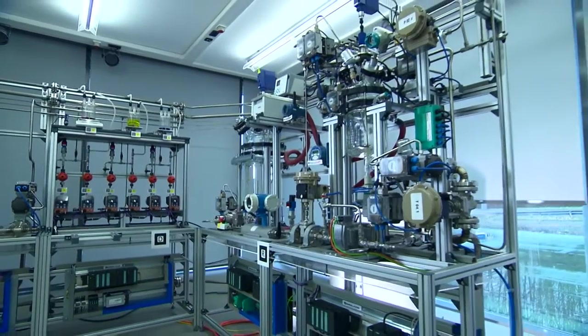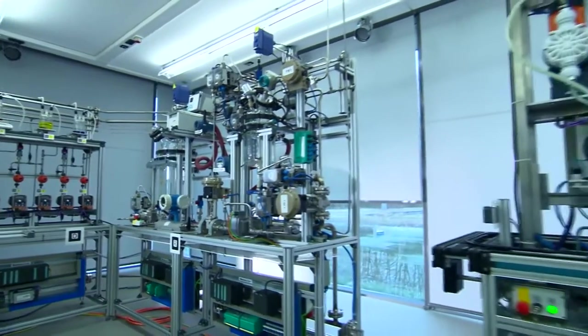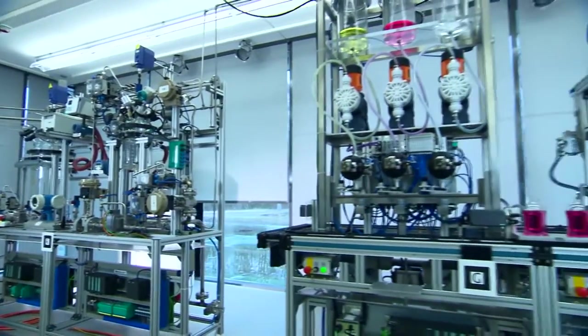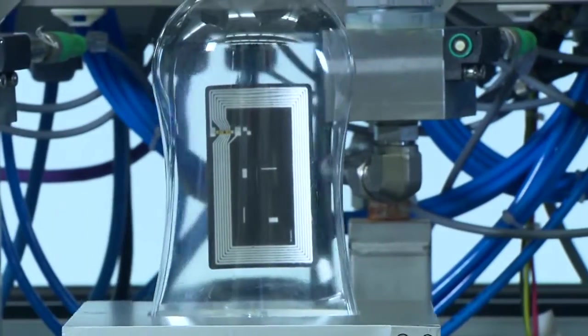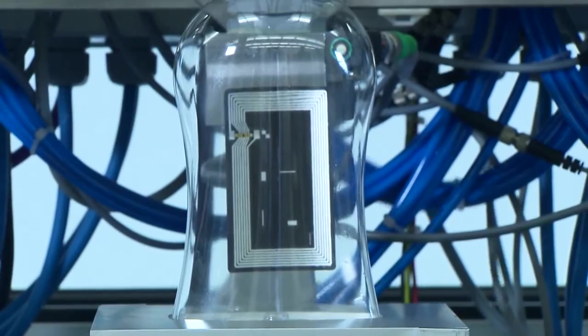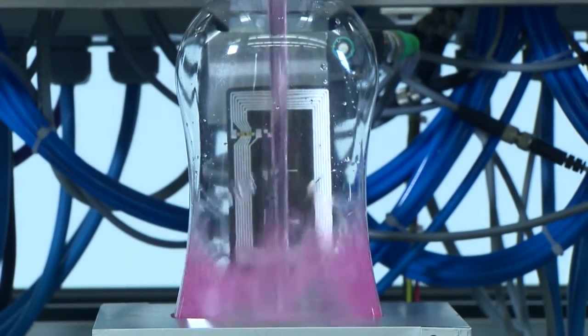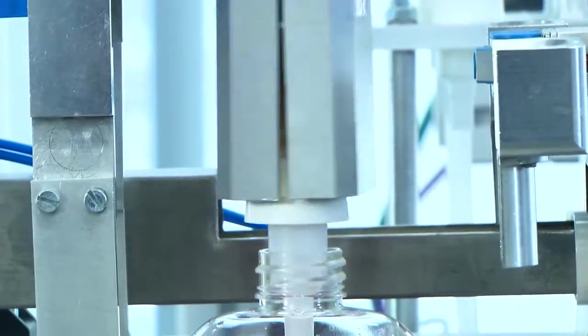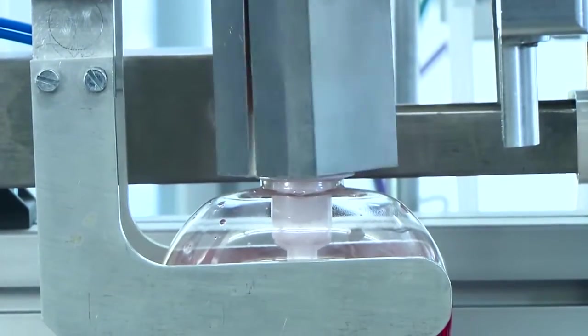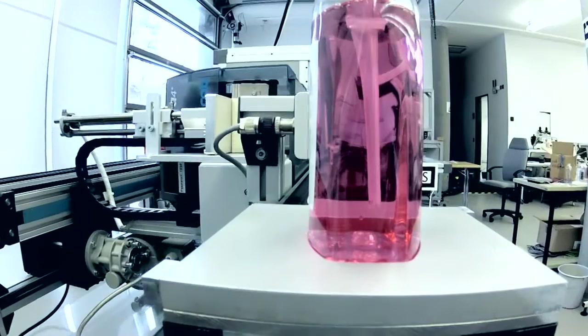A bottling plant for liquids, set up together with Siemens, is used to demonstrate the most important components of the intelligent factory of the future. Each bottle contains an RFID chip storing a precise description of how it has to be processed, which liquid, which lid, and which label.